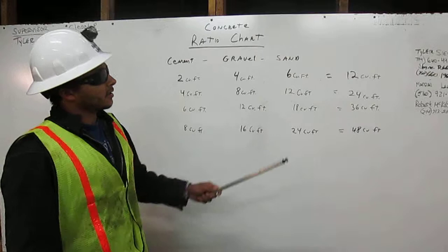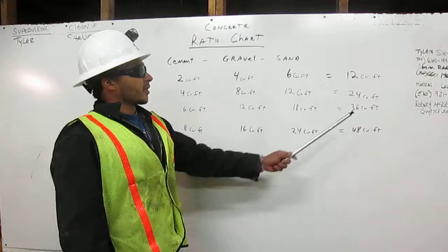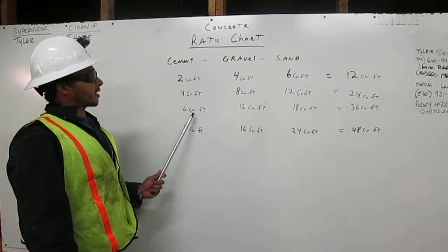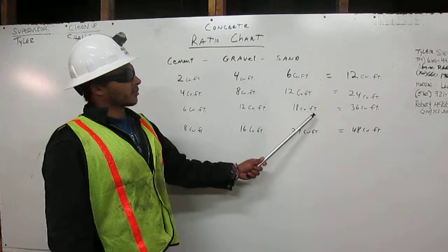That equals 12 cubic feet of our concrete mixture. To make 36 cubic feet of concrete, we mix 6 cubic feet of cement, 12 cubic feet of gravel, and 18 cubic feet of sand. That gives us 36 cubic feet of our concrete mixture, and so forth.